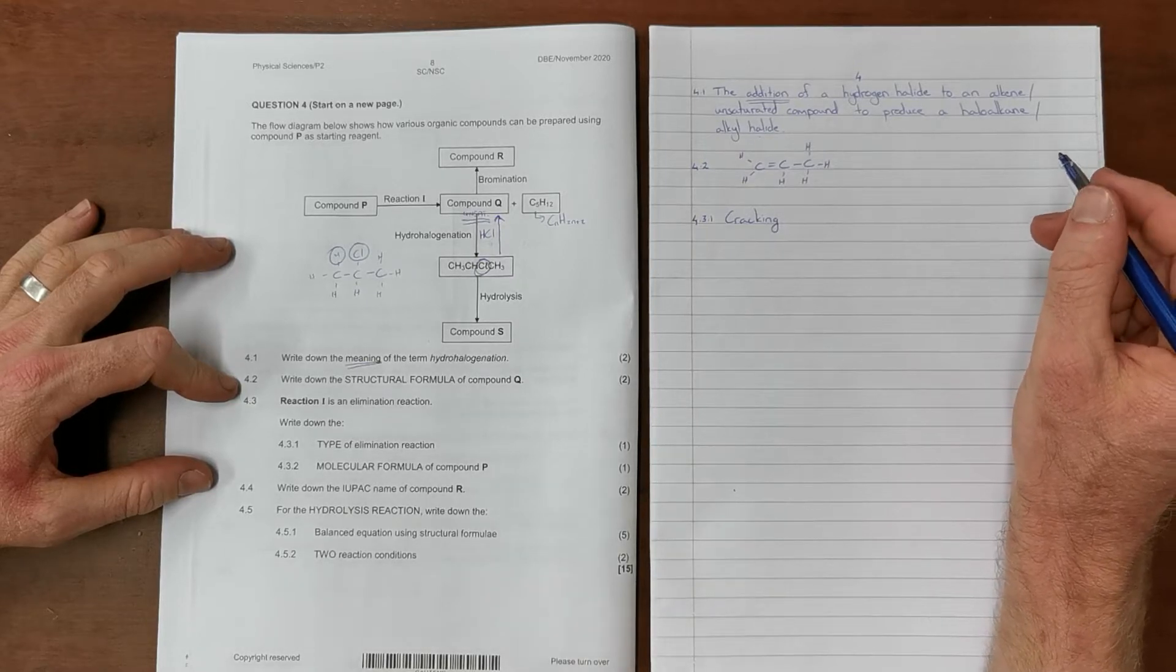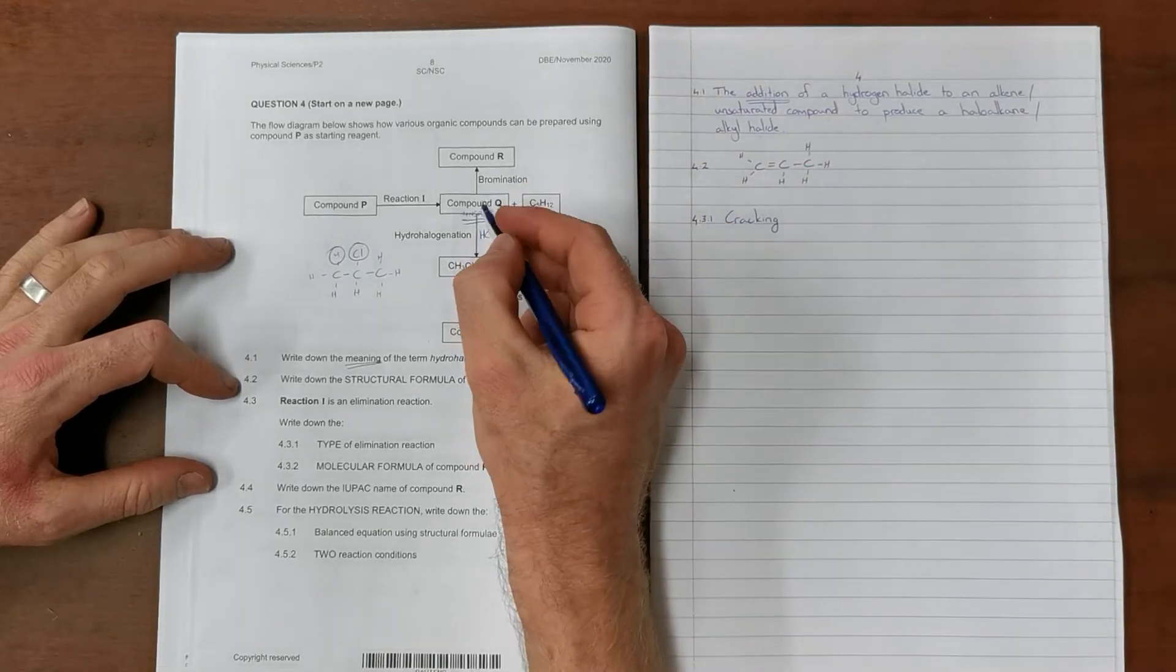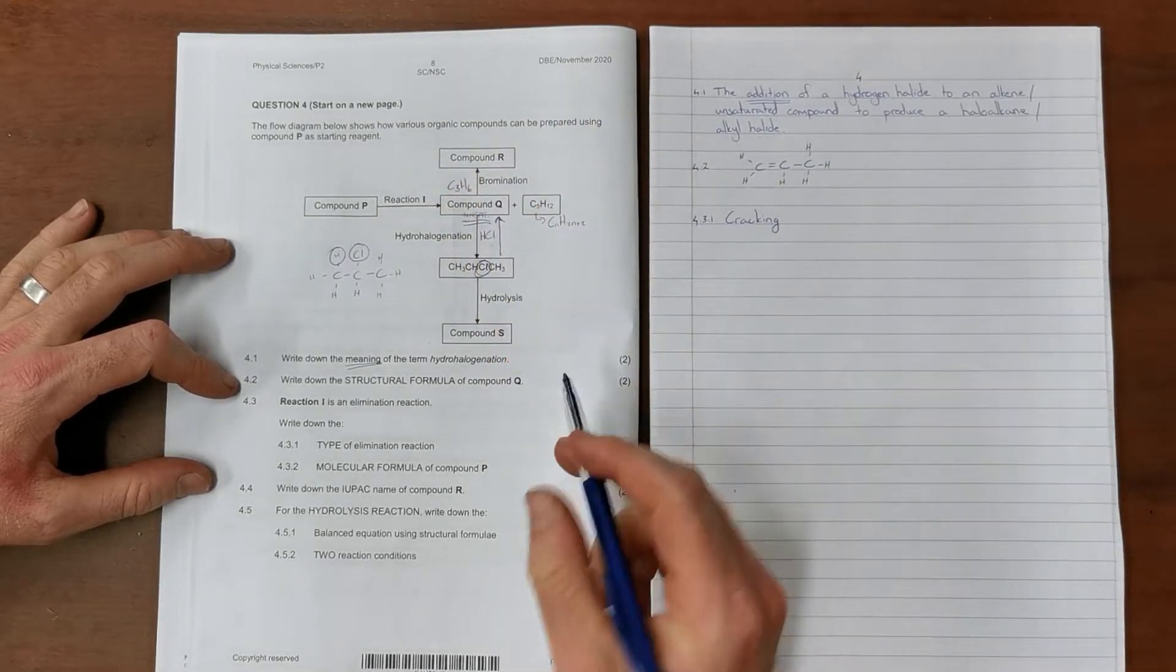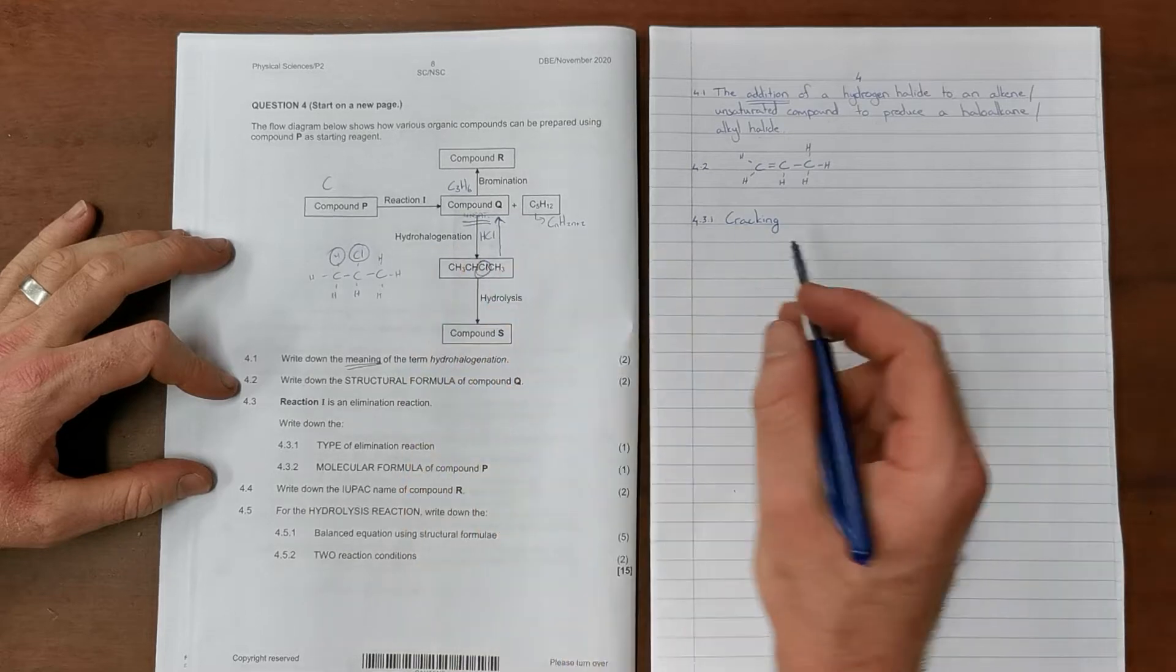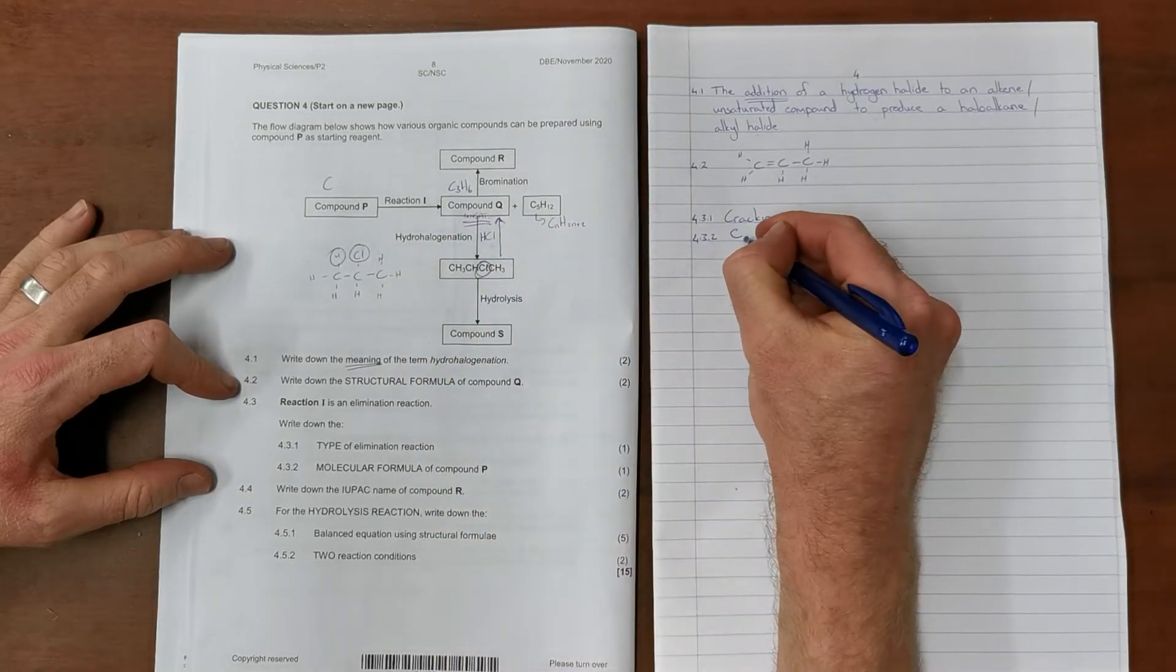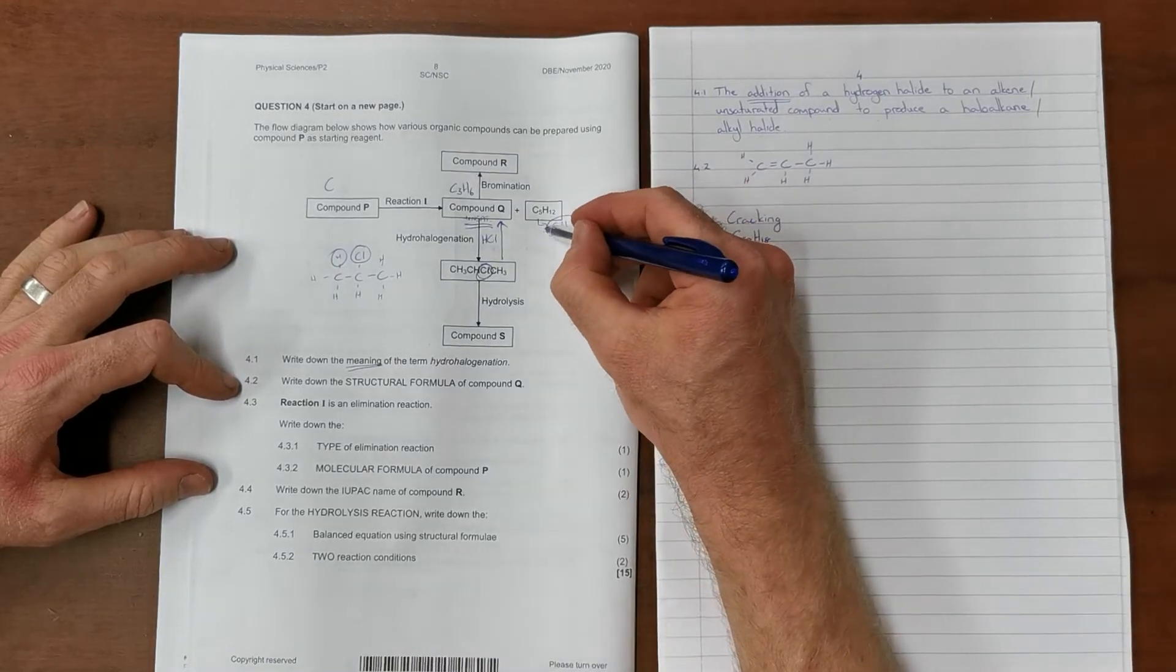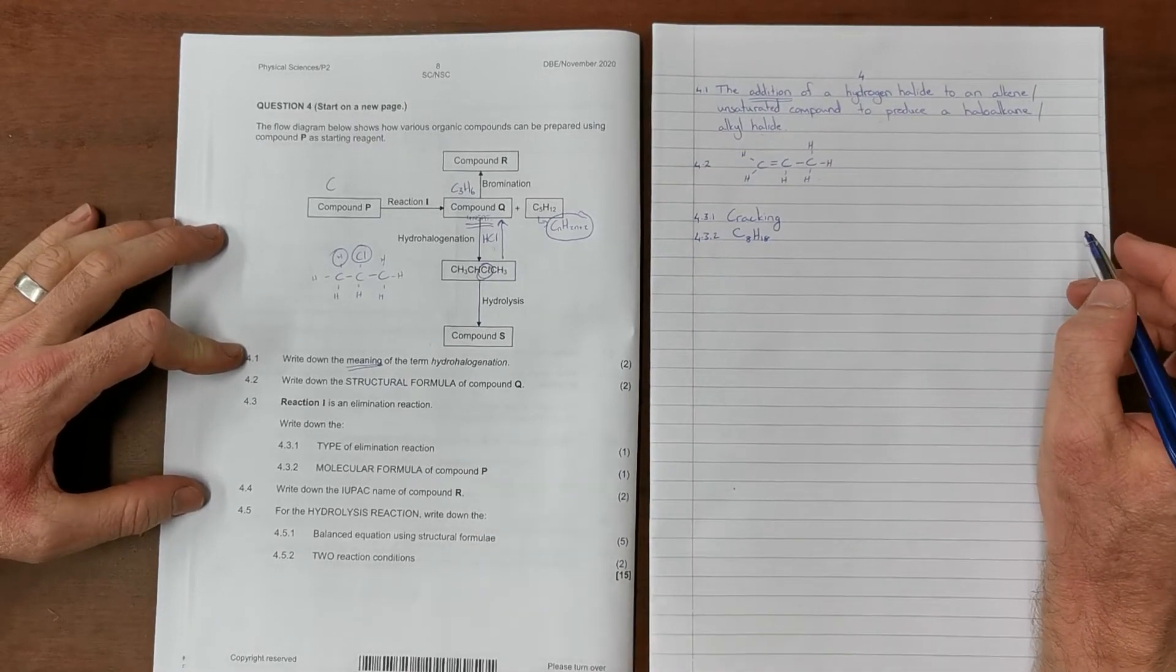Question 4.3.2: write down the molecular formula of compound P. We know from question 4.2 that the molecular formula for compound Q is C3H6, the general formula for an alkene. Because this is a cracking reaction, compound P is going to be the sum of those two. So 4.3.2 is C3 plus 5 equals C8, H6 plus 12 equals C8H18. This makes sense because this also follows the general formula of an alkane, and we know it is always an alkane that undergoes a cracking reaction.